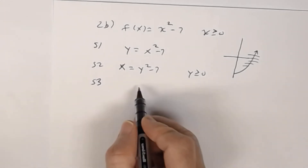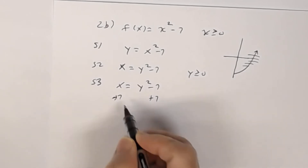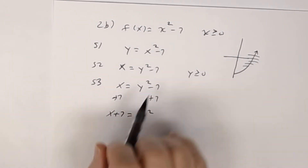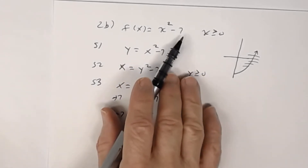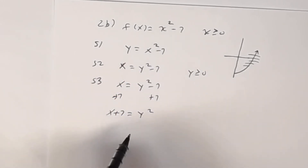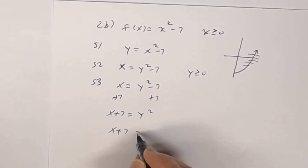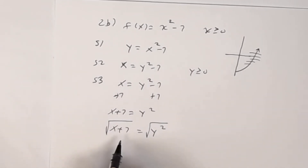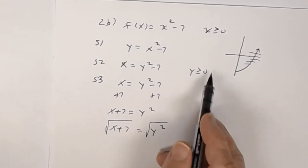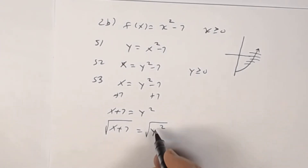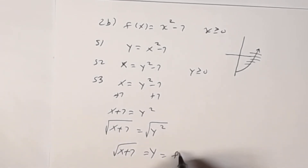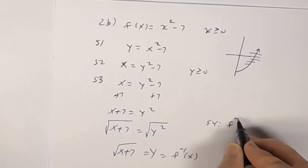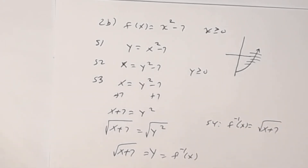Step 3: solve for y. Add 7 to both sides to get x + 7 = y². Now take the square root of both sides. Some students out of habit write ±, but remember you're only looking at positive y values, so you take only the positive square root. That gives y = √(x + 7). Step 4: replace y with the inverse, so f⁻¹(x) = √(x + 7).